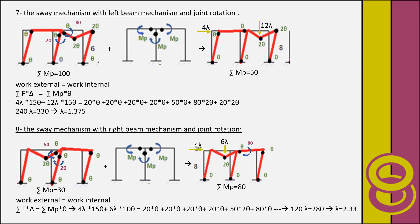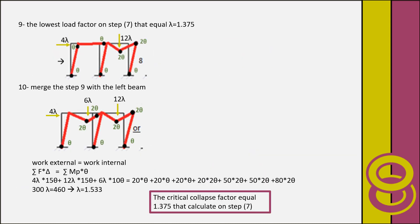Step seven — sway mechanism with left beam mechanism and joint rotation: in this case lambda becomes lower than the lambda from the sway mechanism without joint rotation. Step eight — sway mechanism with right beam mechanism and joint rotation. We take the lowest load factor; in step seven it equals lambda = 1.375. Step ten — merging step nine with the left beam — gives lambda = 1.533. The critical collapse load factor equals 1.375, calculated in step seven of this example.